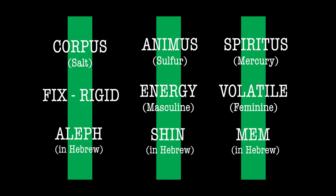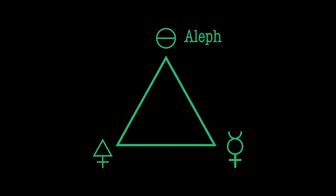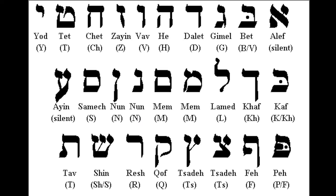So if we take these three elements — corpus, animus, spiritus — and correlate them with the Hebrew alphabet, we get Aleph, Mem, Shin, which in the Sefer Yetzirah and the Kabbalah are very important letters used for creation by God.